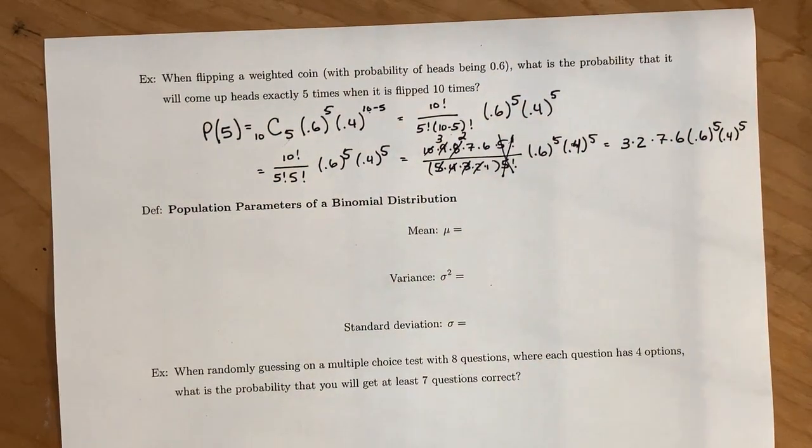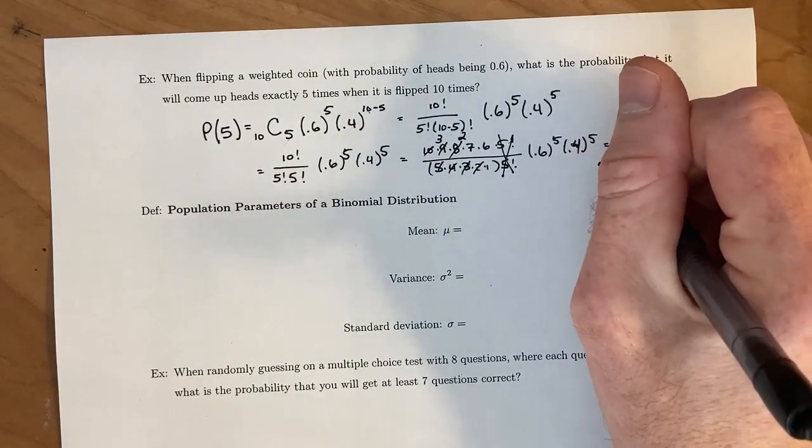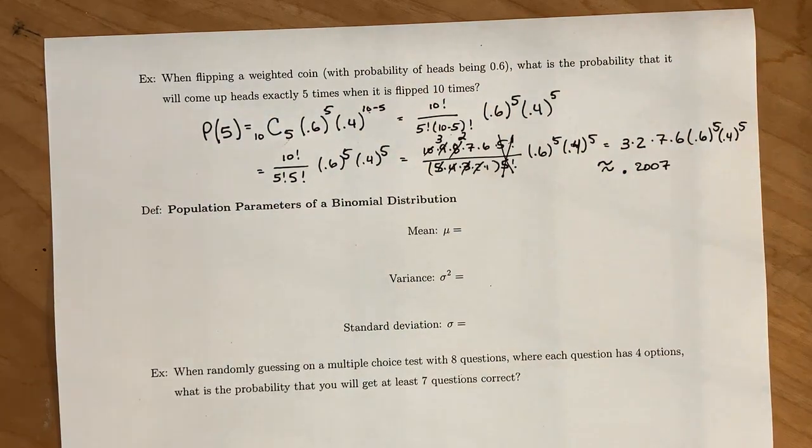And at this point, throw it into a calculator, and you end up getting this thing as roughly 0.2007. So if you had a weighted coin, the probability that you come up with exactly 5 heads out of 10 flips is roughly about 20%.